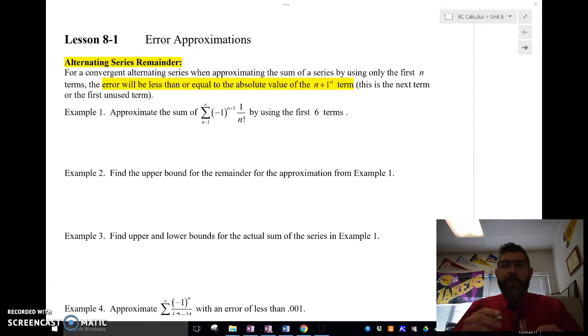For an alternating series, it turns out that the error is going to be less than or equal to whatever the value of the next term after the first n terms that we've used to estimate that series. So let's take a look at a few examples, and hopefully that'll make a little bit more sense.